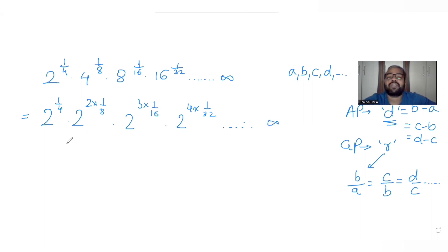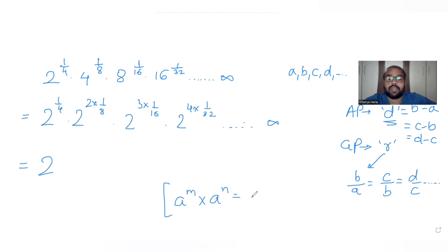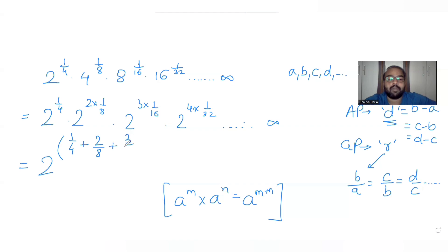Now all terms share the common base 2. Using the index rule — a raised to m times a raised to n equals a raised to m plus n — I can write the entire expression as 2 raised to the sum: 1/4 plus 2/8 plus 3/16 plus 4/32, and so on to infinity.